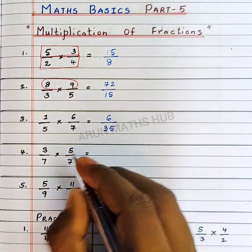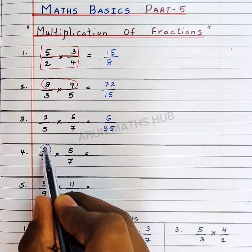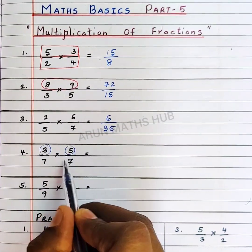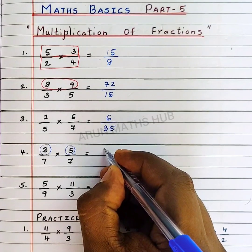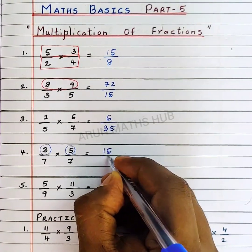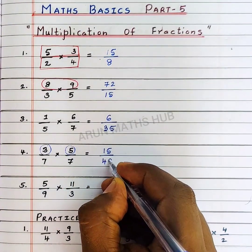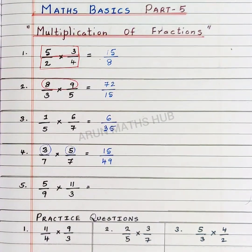The same way, 3 into 15, you will multiply the numerators first and you will multiply the denominators. 3 5s are 15 divided by 7 into 7 is 49.